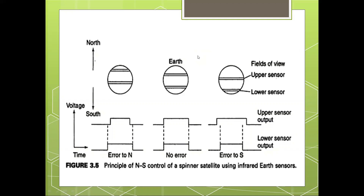If a constant torque exists about an axis, then when the upper or lower speed limit of this wheel is reached, it must be unloaded by operating the closed-loop control of this type of attitude system employed on the satellite to maintain the correct attitude.